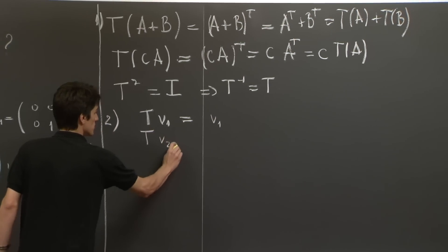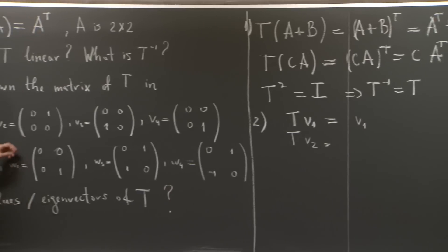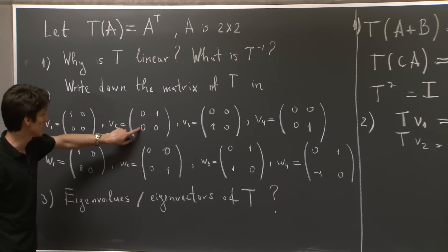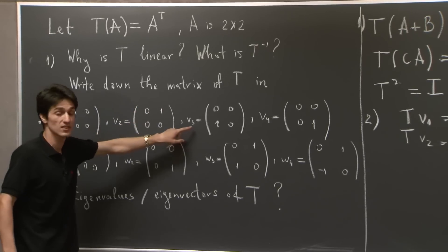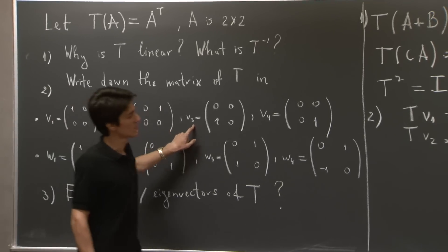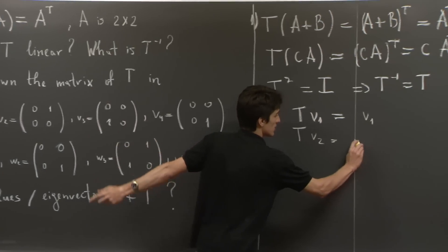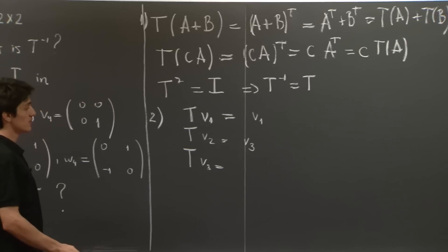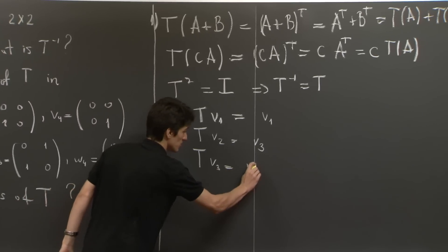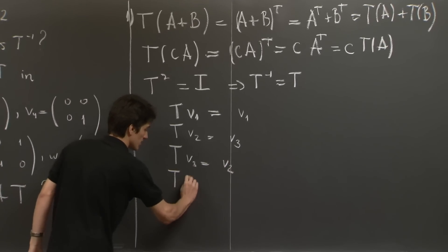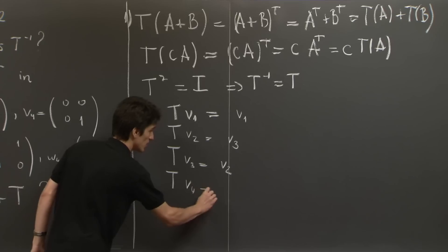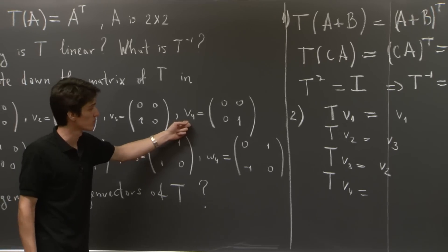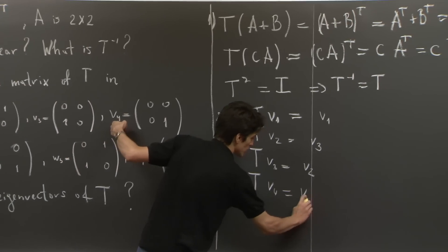What about T of V2? Again, we come back here. So this one comes here. Zero comes here. And so we actually get V3. So T of V2 is V3. Similarly, T of V3 is V2. And finally, T of V4. Well, V4 is a symmetric matrix as well. So the transpose doesn't change it.